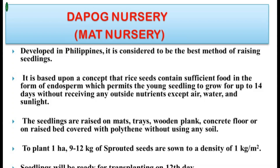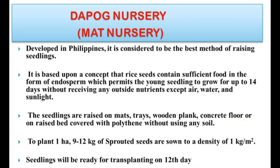To plant one hectare, 9 to 12 kg of sprouted seeds are sown at a density of 1 kg per square meter. Per square meter area, 1 kg of sprouted seeds are sown in case of Dapog nursery. Seedlings will be ready for transplanting on the twelfth day.